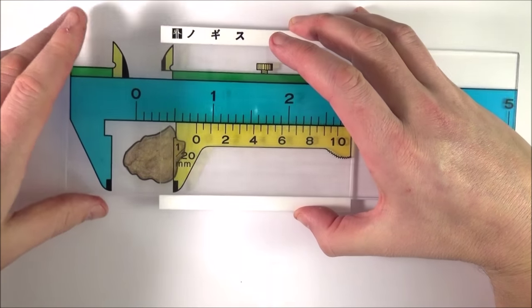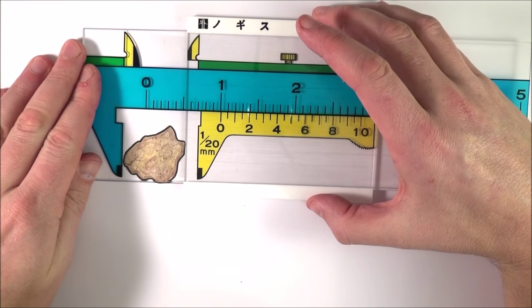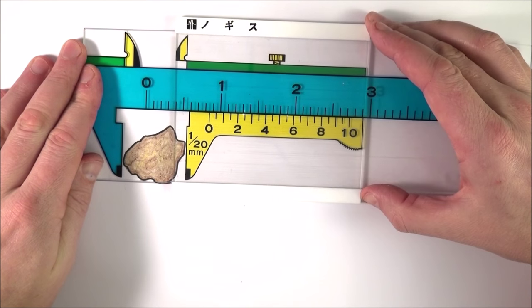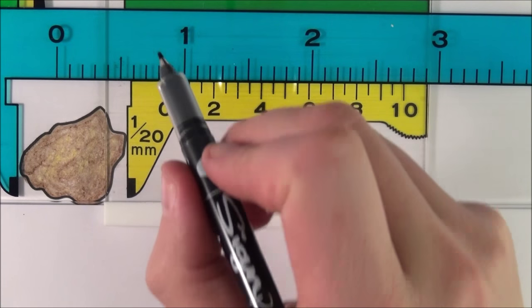We have an object like a rock. What we want to do is see how wide it is at its widest point. We do that by just closing the jaws very gently until it touches the object without squashing it. Then the fun begins—it's all to do with this part here.